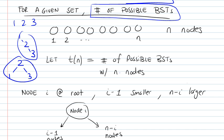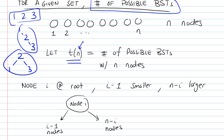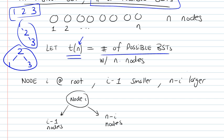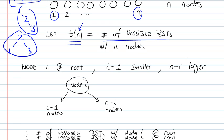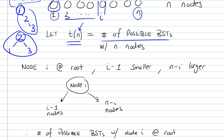How many such possibilities can we find for a given set of elements? We use a recurrence relationship. Let t(n) be the number of possible BSTs with n nodes. What gives us all the multiple representations is taking every single node and assigning it as the root of our tree. For node i at the root, we have i-1 nodes smaller and n-i nodes larger.